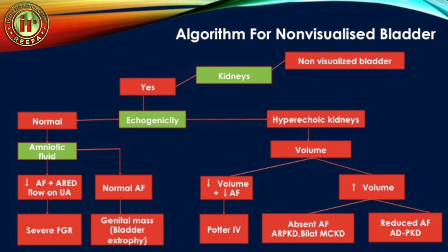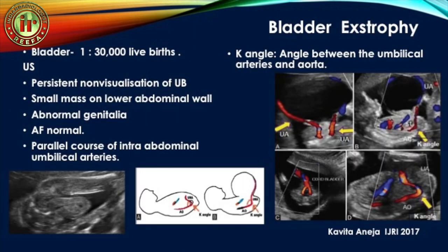If renal echogenicity is normal, we look at the amniotic fluid. If amniotic fluid is reduced with absent or reversed end-diastolic flow on umbilical arteries, it is severe FGR. If amniotic fluid is normal, we evaluate the genital area for any genital mass representing bladder exstrophy or cloacal exstrophy.